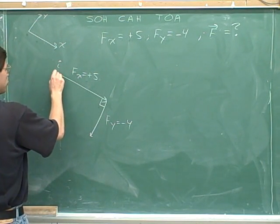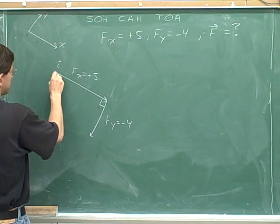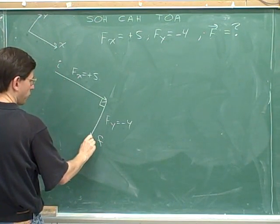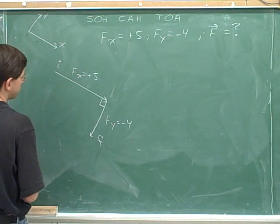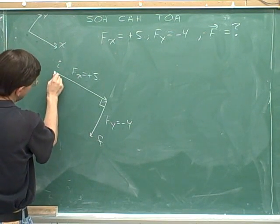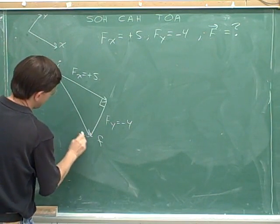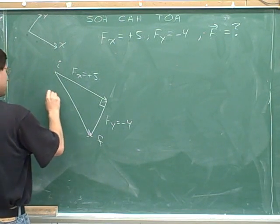We can think of this as the initial point because this is where the x component started off, and we can think of this as the final point because this is where the y component ended up. The overall vector should also point away from the initial point and towards the final point. So here's our overall vector.